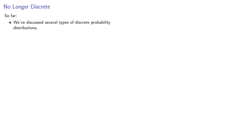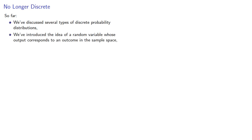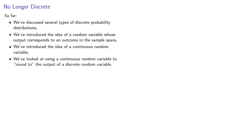Here's a quick recap of what we've done so far. We've discussed several types of discrete probability distributions. We've introduced the idea of a random variable whose output corresponds to an outcome in the sample space. We've introduced the idea of a continuous random variable and looked at using a continuous random variable to round to the output of a discrete random variable. The important question is why — and the answer is because calculus is easier than algebra.